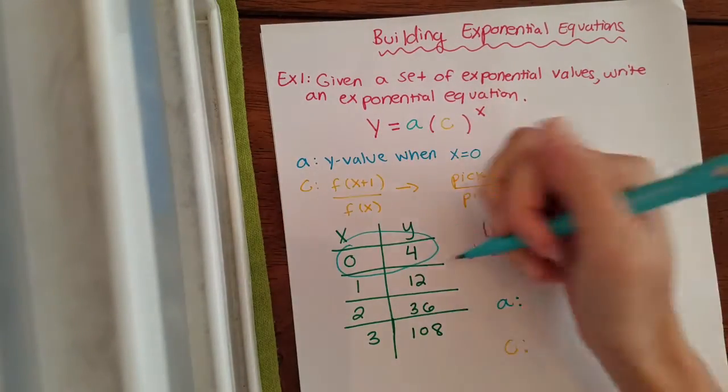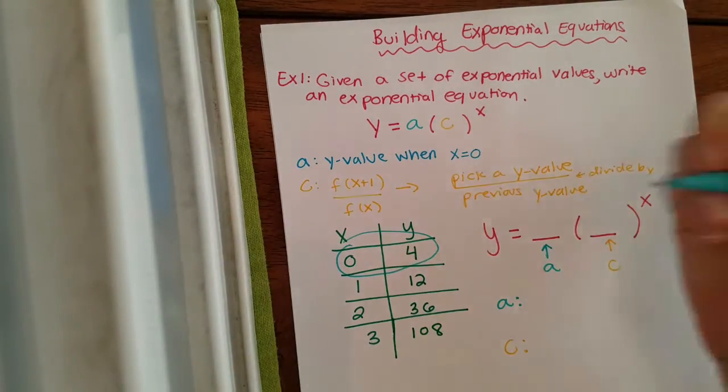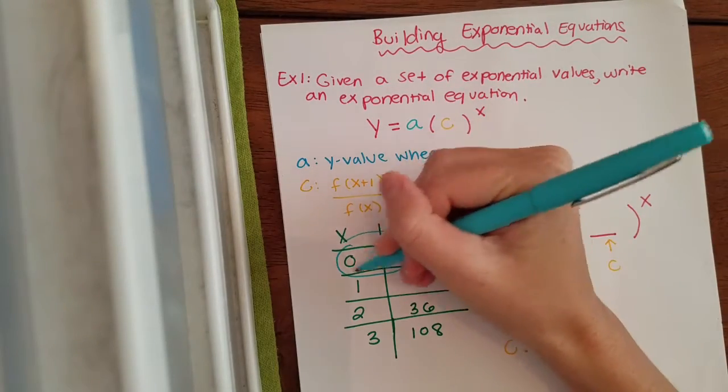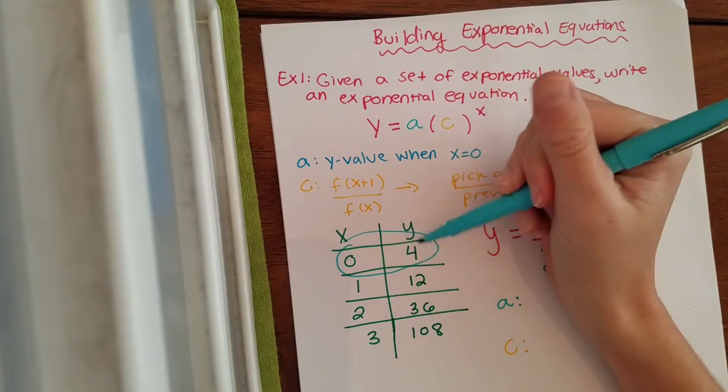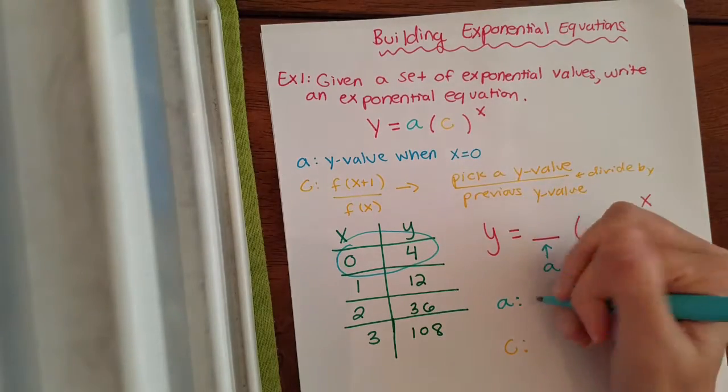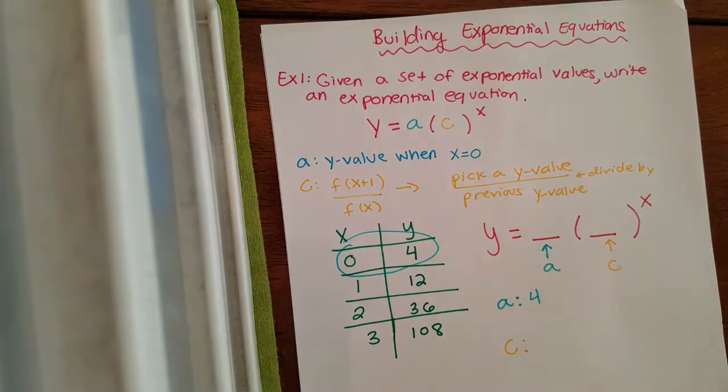So you're just focusing on what is y when x is zero. So the y value when x is zero is four. So simply your a value is just four.